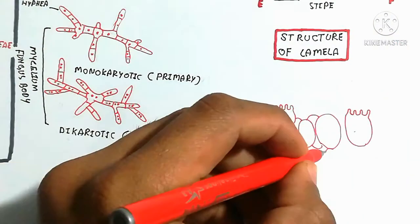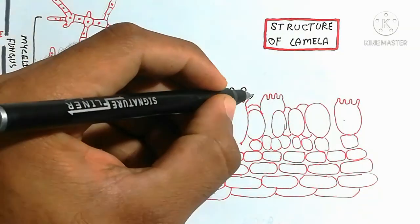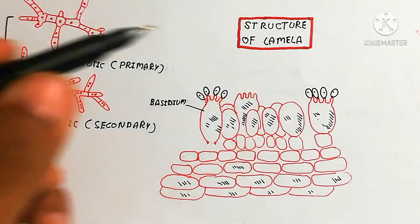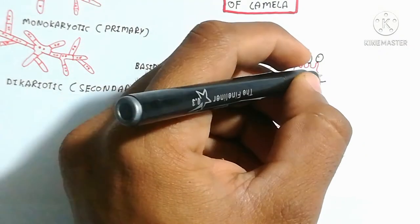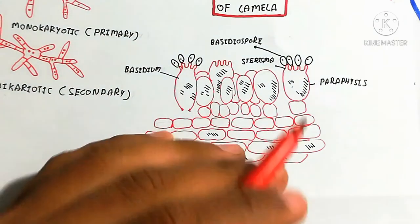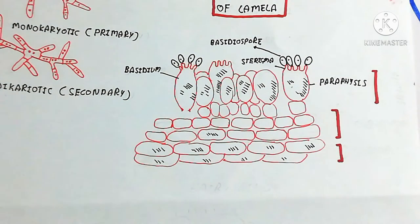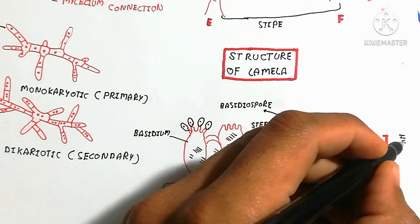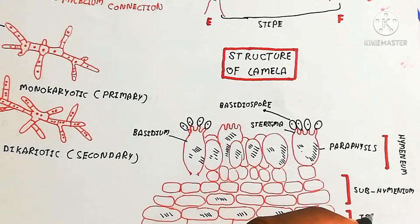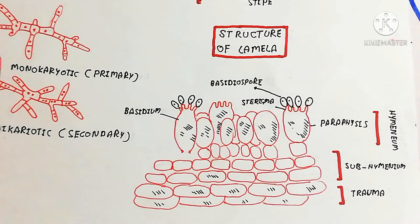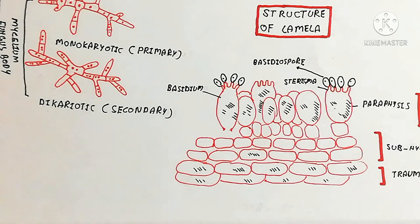Now we will discuss the lamellar structure. The lamellar structure contains the basidium — the spore-producing body. Here is the paraphysis and the hymenium layer, the sub-hymenium layer, and the trama on the underside. The basidium produces spores attached via a sterile structure called the sterigma.